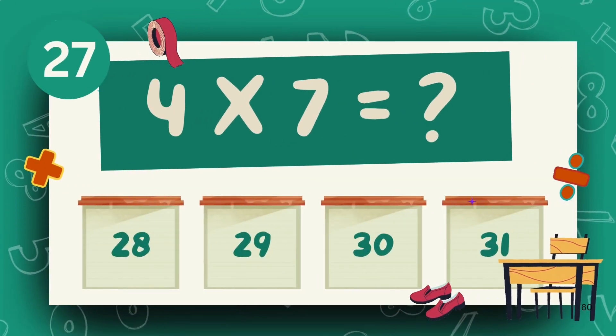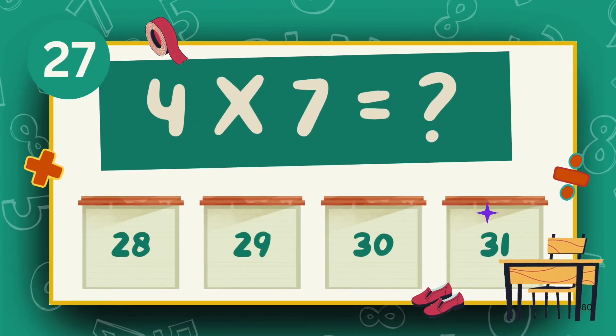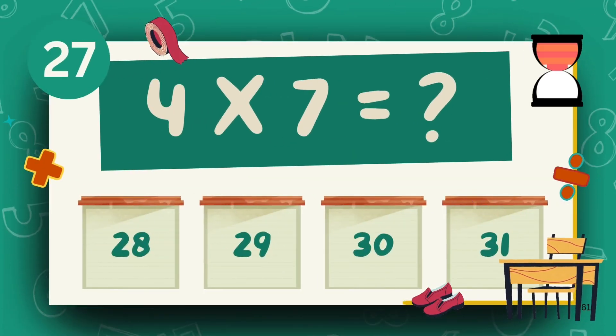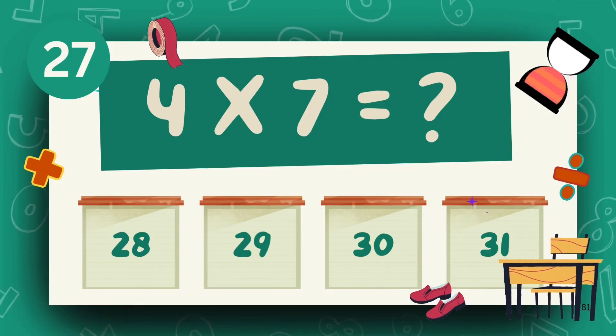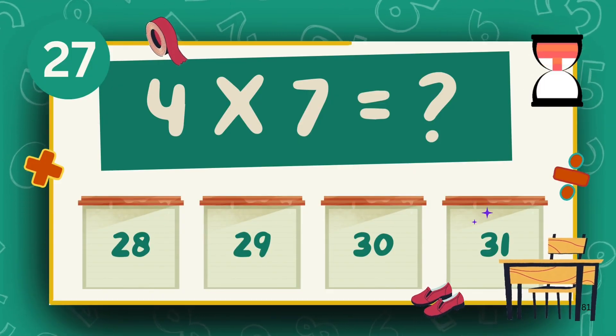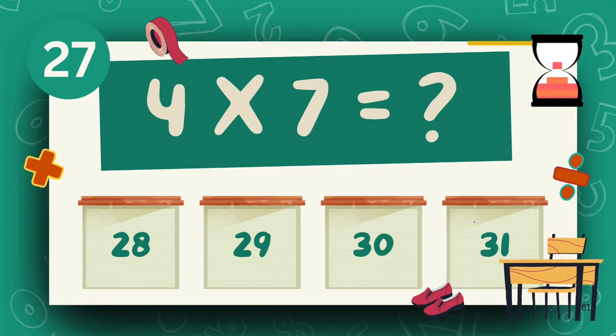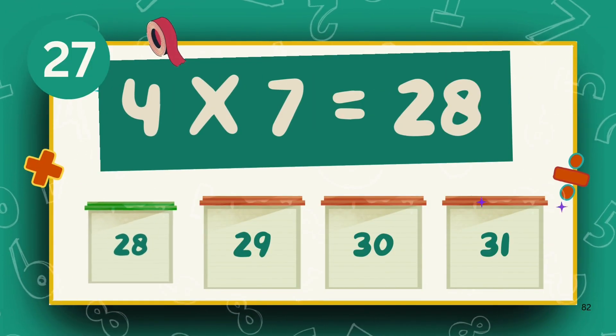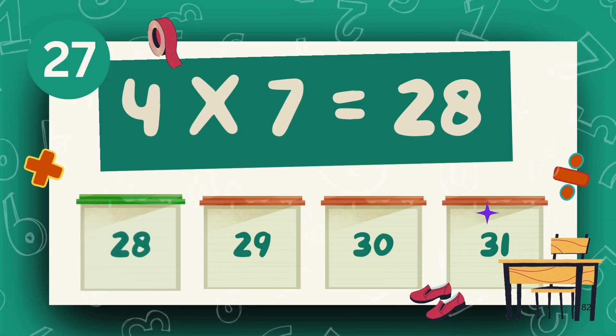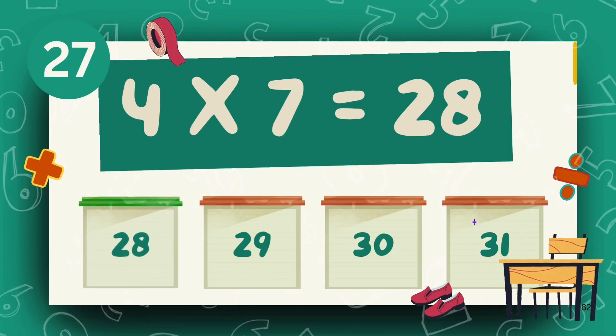What is 4 times 7? What is 5 times 8? The answer is 28.